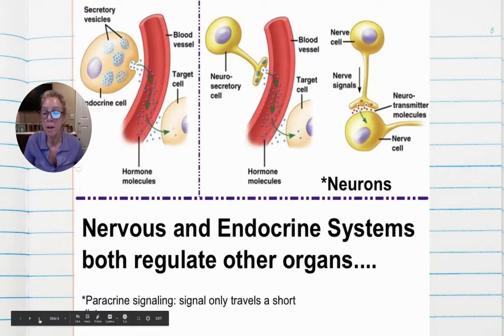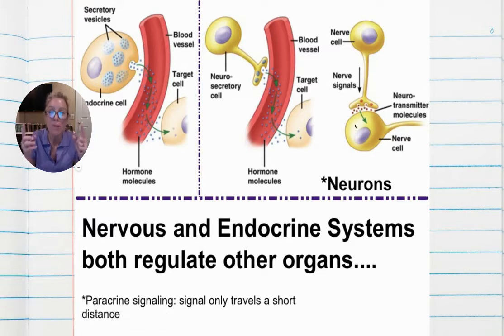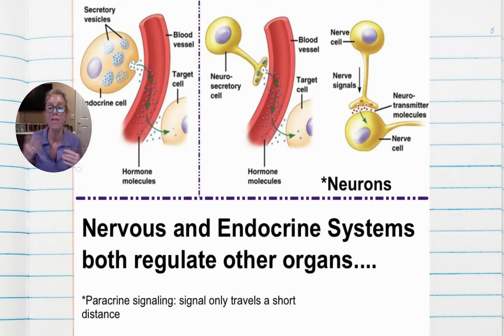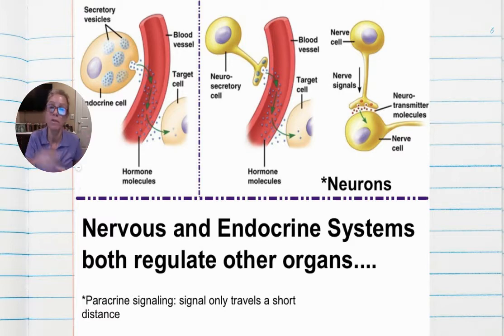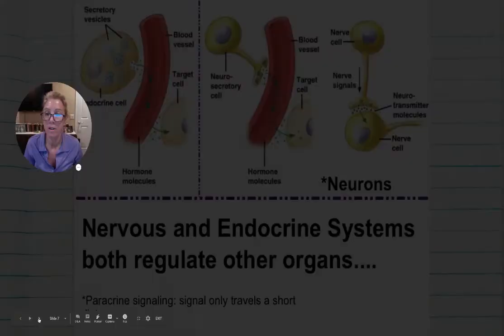Comparing and contrasting: the nervous system works a lot more quickly than the endocrine system. But conversely, the impact of the endocrine system is very long lasting — think about what it influences, like growth, development, and homeostasis. So the endocrine system acts more slowly, but the effect is longer lasting.